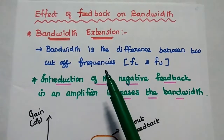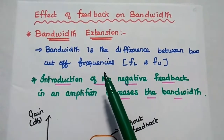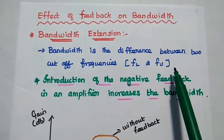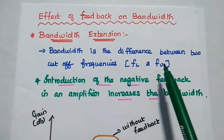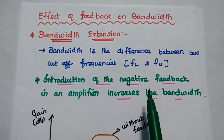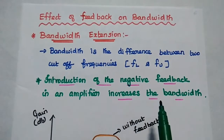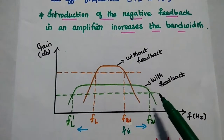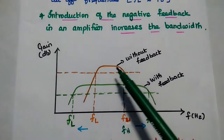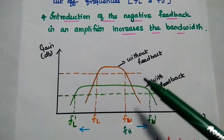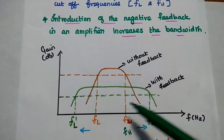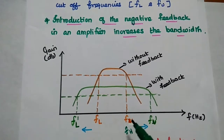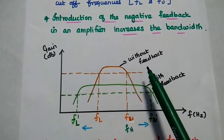Let's start with the Bandwidth Extension property. As we know, bandwidth is the difference between two cutoff frequencies: the Lower Cutoff Frequency FEL and the Upper Cutoff Frequency FU — it is the range of frequencies between FEL and FU. Due to the introduction of negative feedback in an amplifier, the bandwidth is extended or increased. We can consider the diagram showing the frequency response of the amplifier with feedback and without feedback. The bandwidth of the amplifier with feedback is increased compared to the without-feedback range. Here FEL and FU represent the lower and upper cutoff frequencies for the amplifier without feedback.